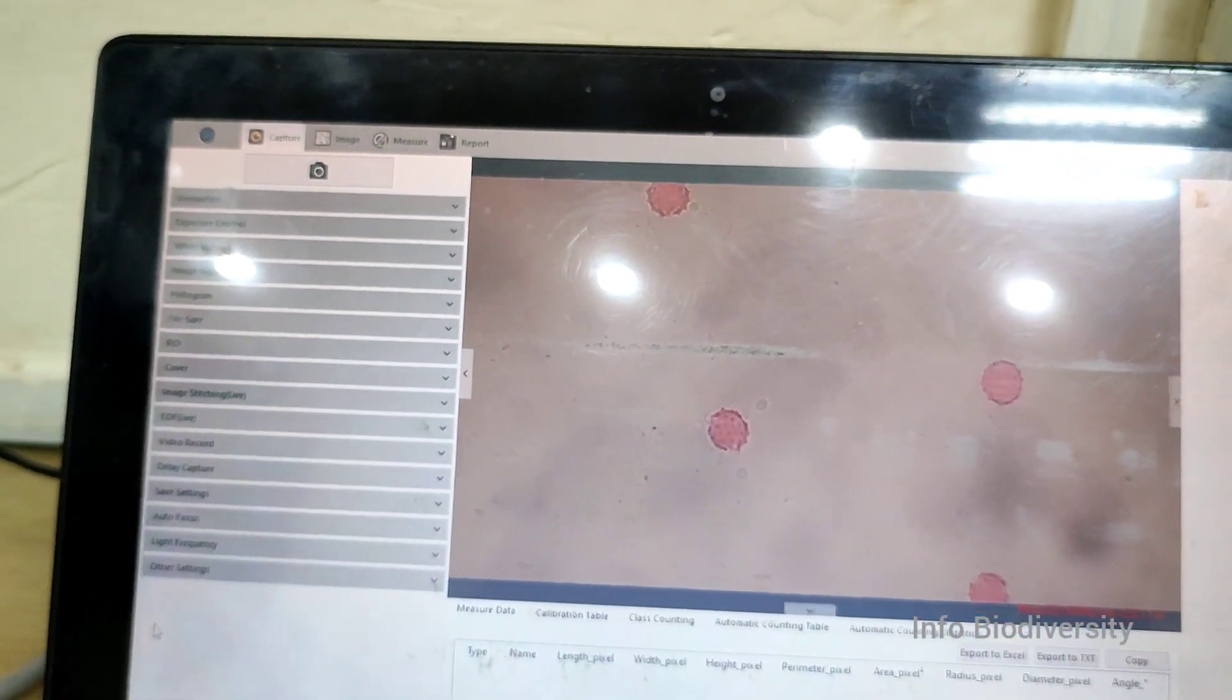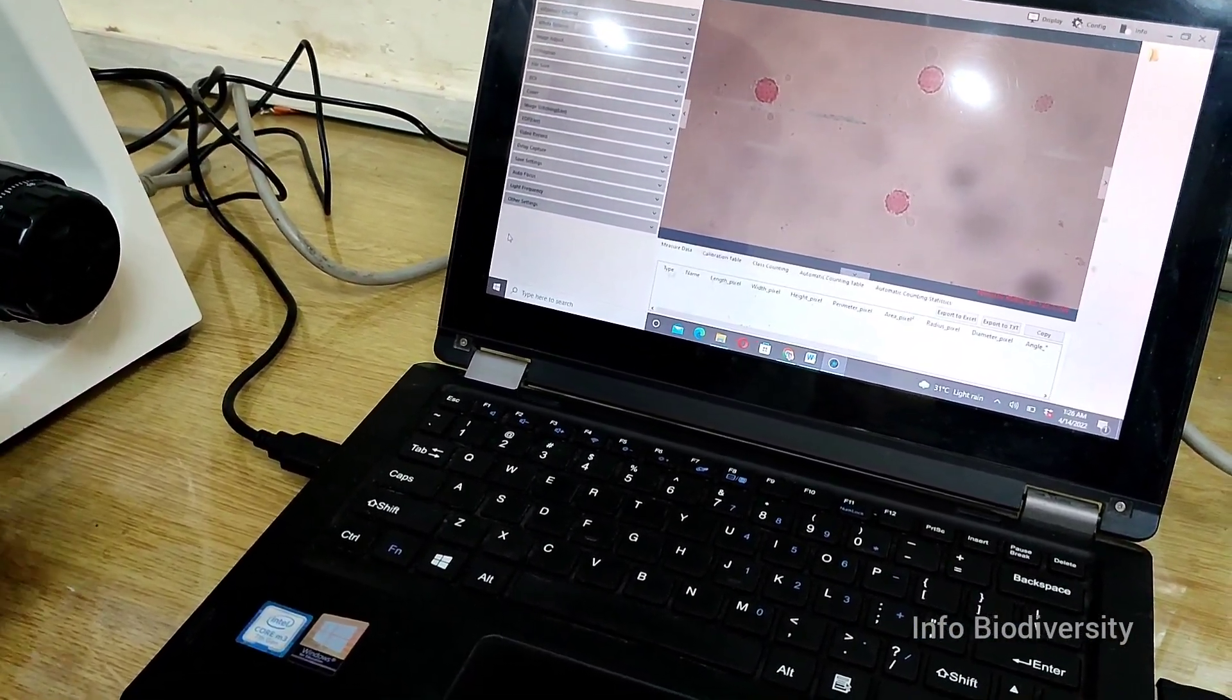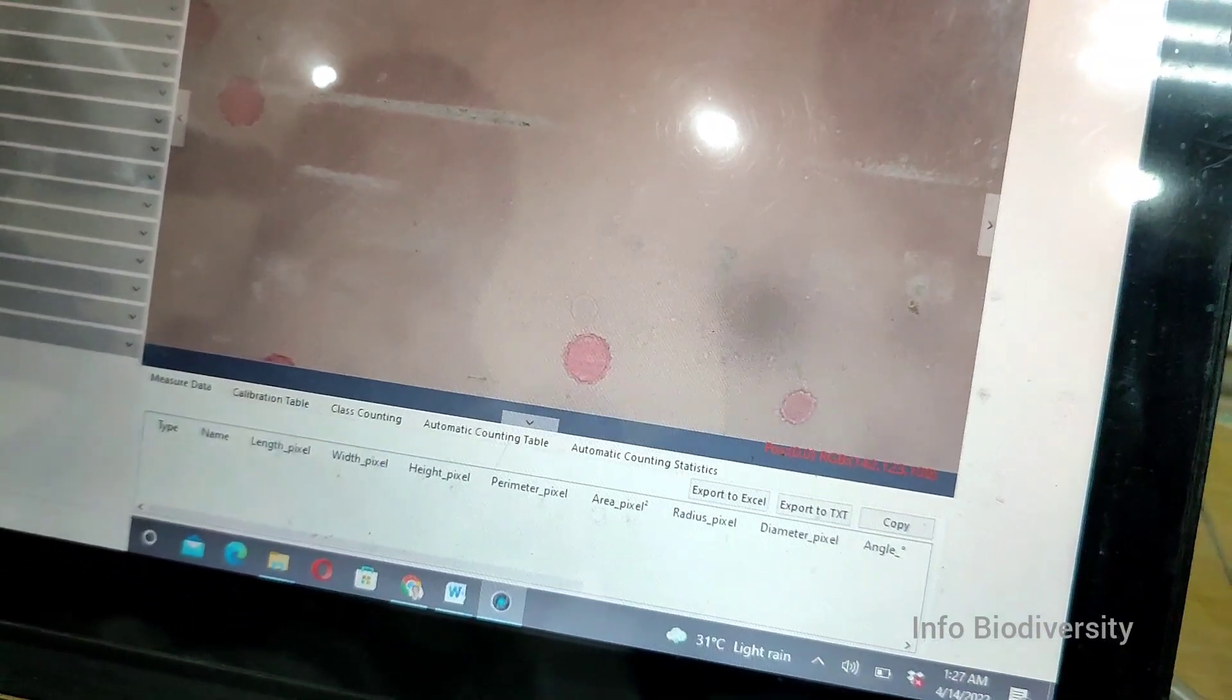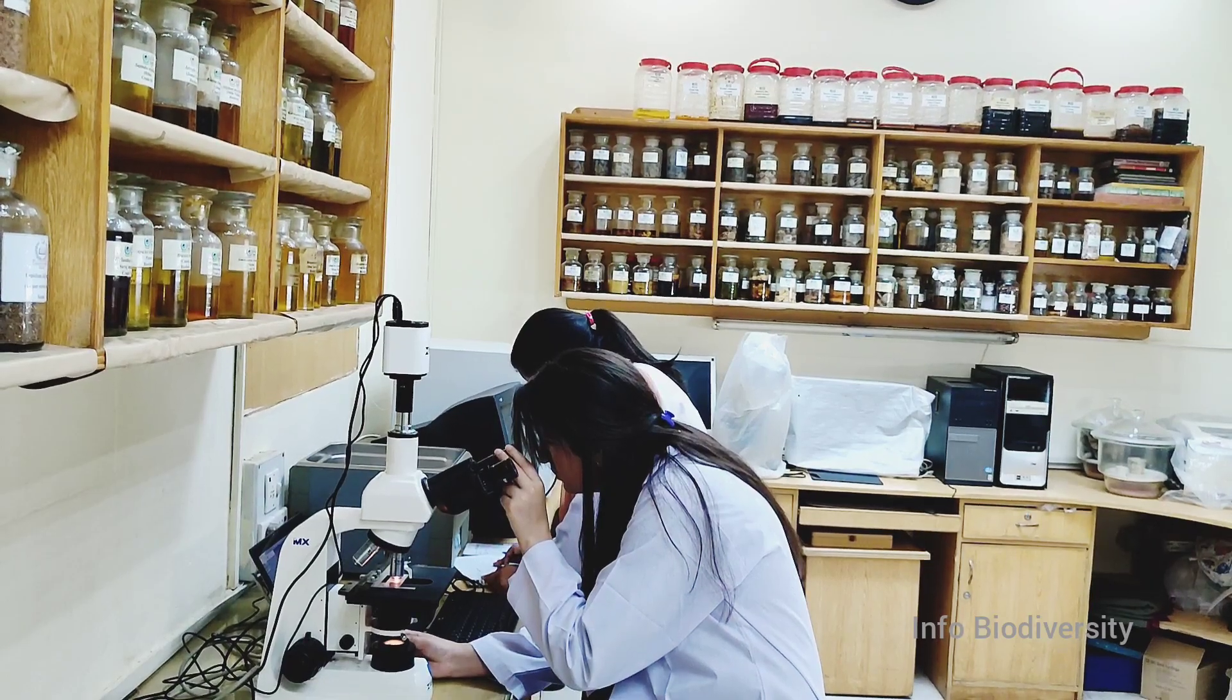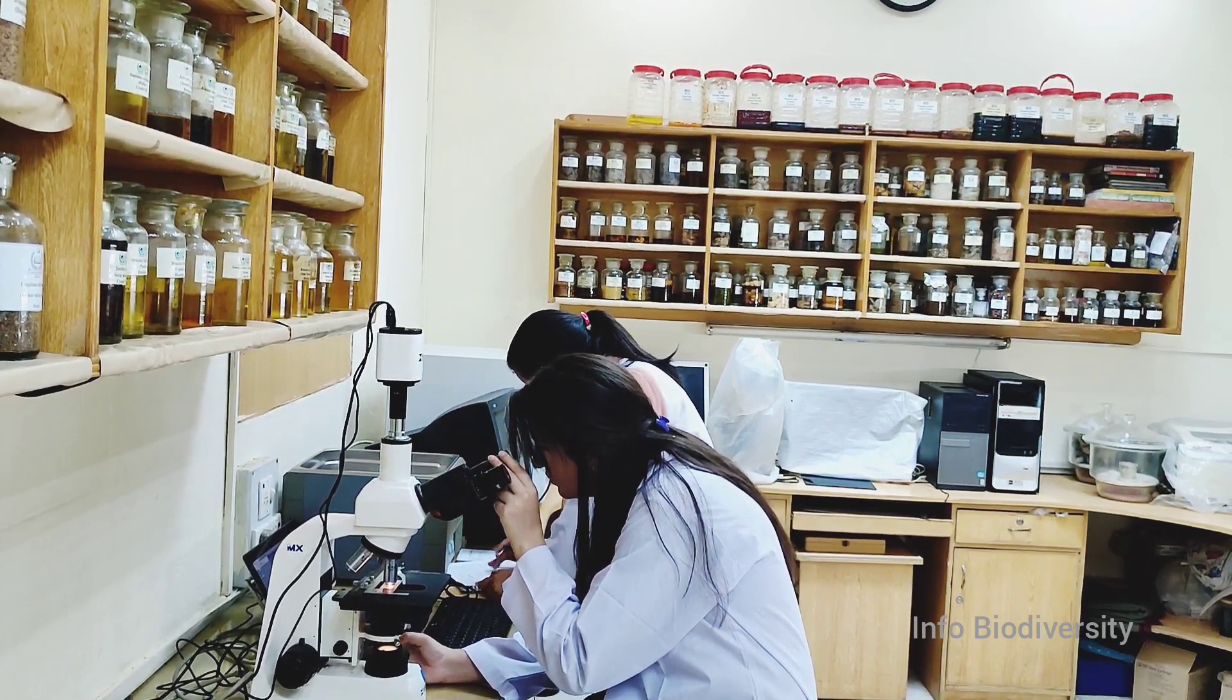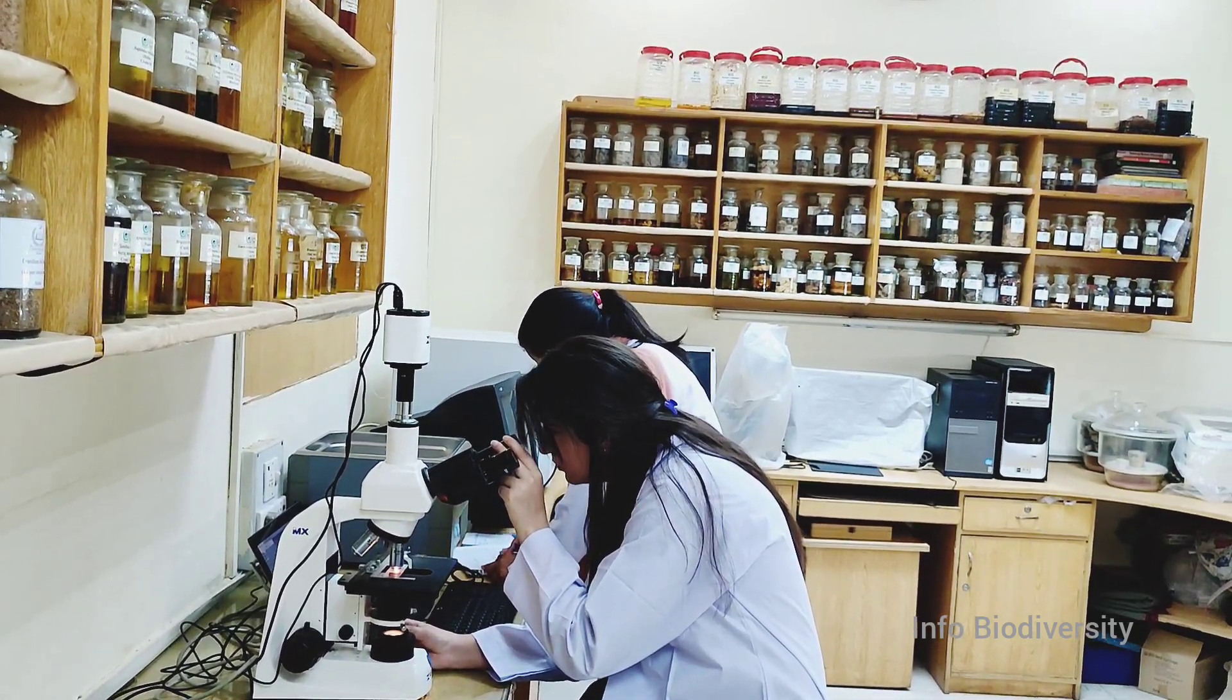This is the pollen of Centaurea iberica under 40x and here you see on the screen of the laptop the microphotograph. This is an equatorial view while this is a polar view. Why do we study pollen? Because pollens are important features that are used to identify plants which are difficult to identify by morphology. We use the microscopic characters of the pollen to differentiate closely related species in different genera, families, and orders.